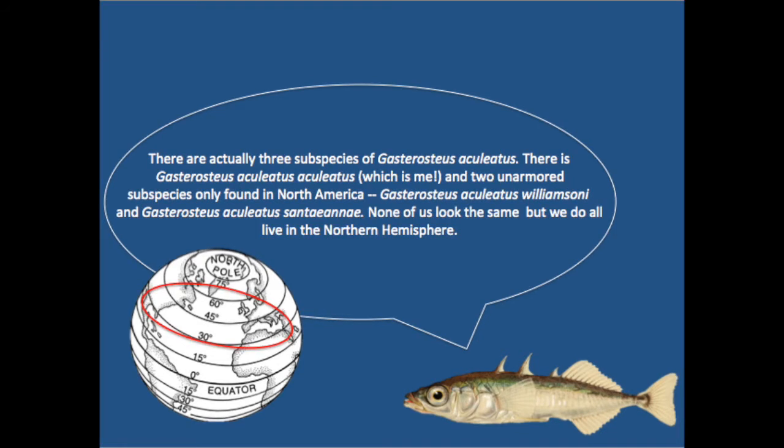There are actually three subspecies of Gastrosteus aculeatus. There's Gastrosteus aculeatus aculeatus, which is me, and two unarmored subspecies only found in North America: Gastrosteus aculeatus williamsoni and Gastrosteus aculeatus microcephalus. None of us look the same, but we do all live in the northern hemisphere.